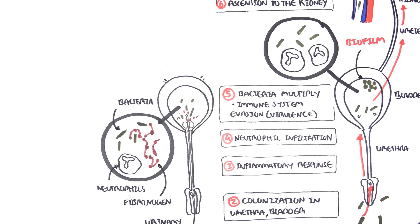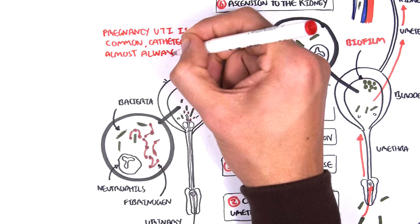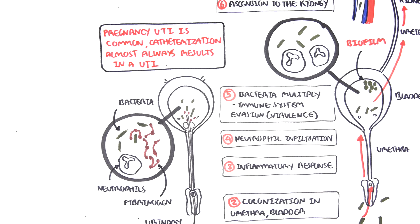In pregnancy, urinary tract infections are common. Catheterization will almost always result in a UTI — not only is the urethra shorter in women, but during pregnancy progesterone relaxes smooth muscle, causing stasis of urine, which allows for colonization, especially up to the kidneys. During pregnancy, it is important to perform urine analysis, as not only are urinary tract infections more common, but they are also asymptomatic. Untreated UTIs during pregnancy can have consequences for the growing infant in utero.